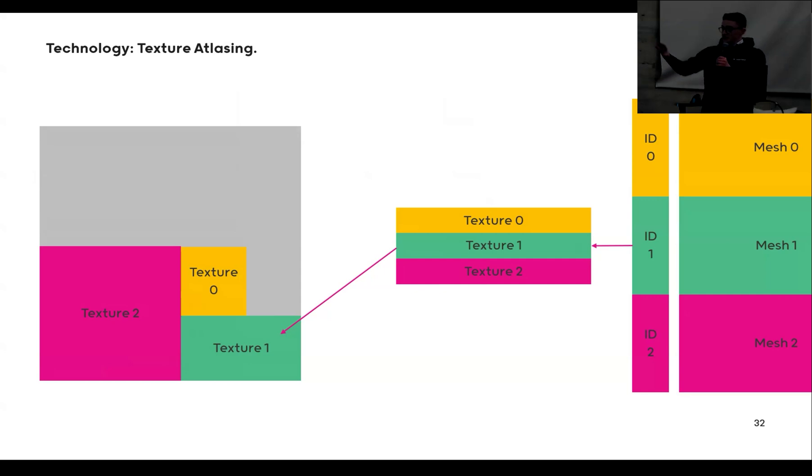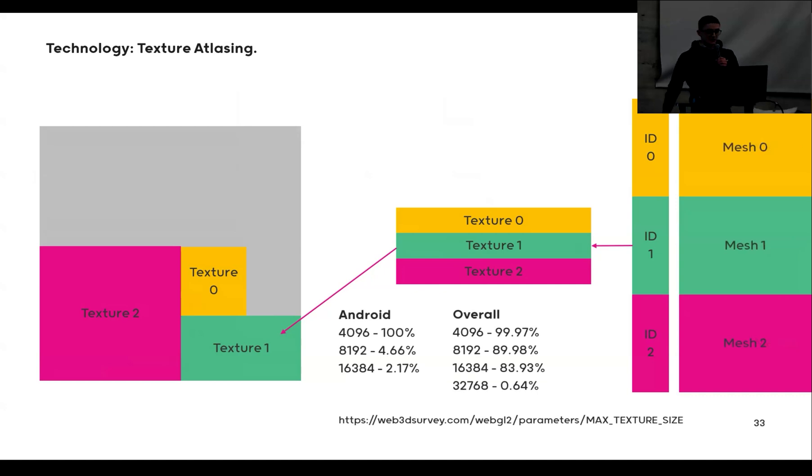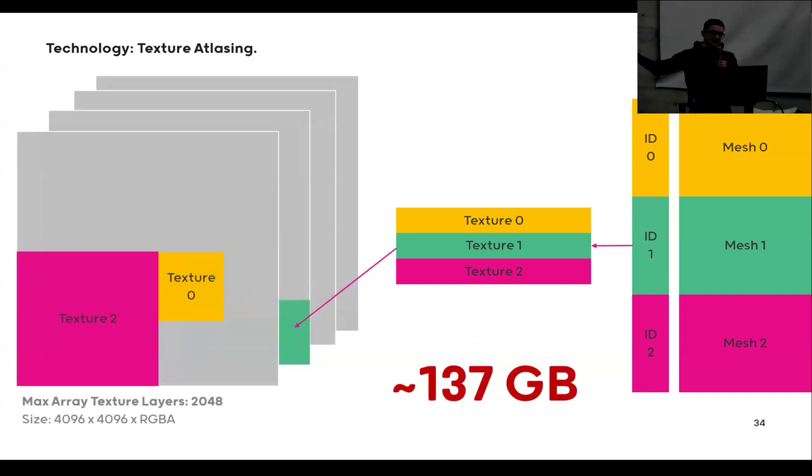That looks roughly like this: we just define a range, and that range kind of points into one big texture. So what's the big problem here? On Android, unfortunately the biggest texture size you can use for that is kind of 4K. And overall, 4K seems to be the sweet spot. So that gives us kind of a limit of what the biggest texture size can be. I don't know if we could do texture array layers and just have up to 2048 textures.